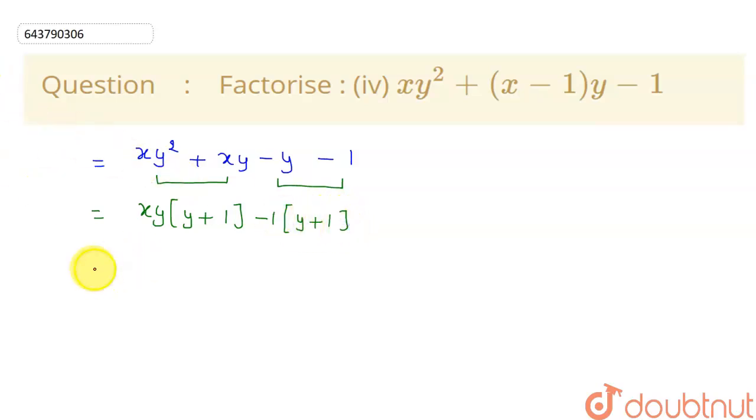Now see, in the next step, I can take y plus 1 common from these two terms. If I take y plus 1 common, from this term I will be getting xy, and from this term I will be getting minus 1. So that will be my answer.